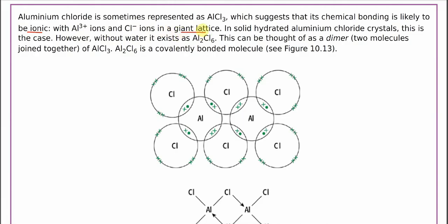However, this ionic structure will just be inside the solid hydrated aluminum chloride. When there is presence of water of crystallization, the aluminum chloride will most likely be the giant lattice structure, giant ionic.